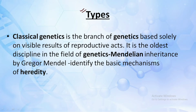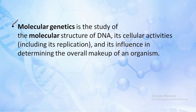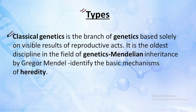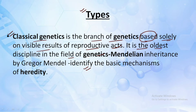Before defining these terms one by one, let's understand the various types of genetics. We mainly have three types: classical genetics, molecular genetics, and evolutionary genetics. Classical genetics is based solely on the visible results of reproductive acts — it is the oldest discipline in genetics. Mendelian genetics is based on identifying the basic mechanism of heredity. We'll be understanding all the laws of Mendelian inheritance in detail in the next video.